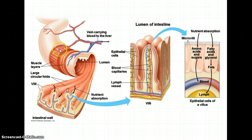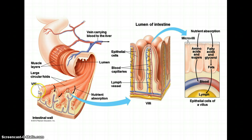Here we see the structures of the small intestine, with its muscle layers and epithelial layers. There are large circular folds called rugae inside the intestine, which increase surface area. Those rugae are covered by smaller divisions called villi, and each villus is composed of cells that have microvilli. This layered structure — rugae, villi, and microvilli — greatly increases the surface area available for absorption.